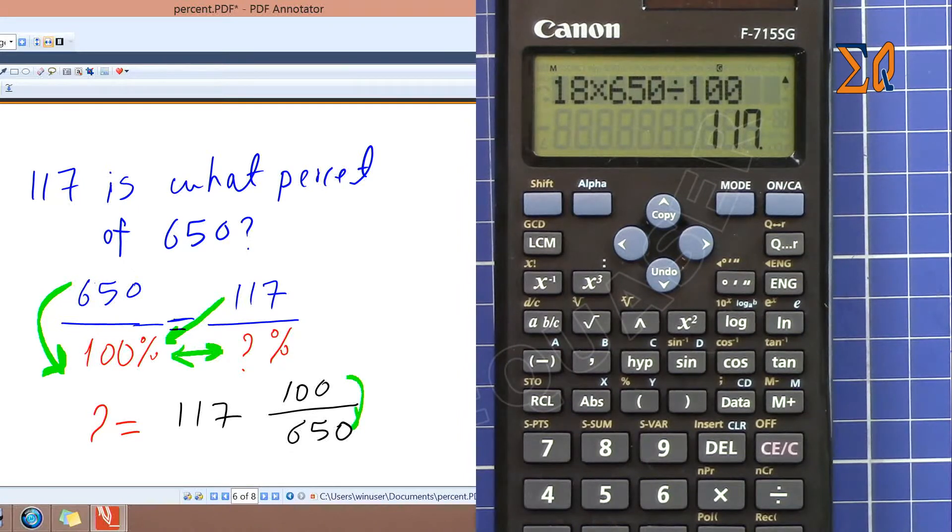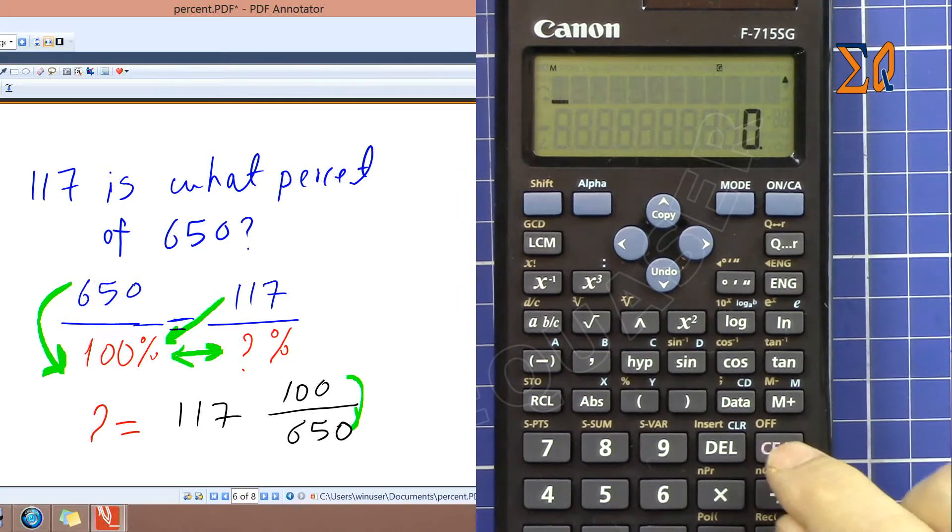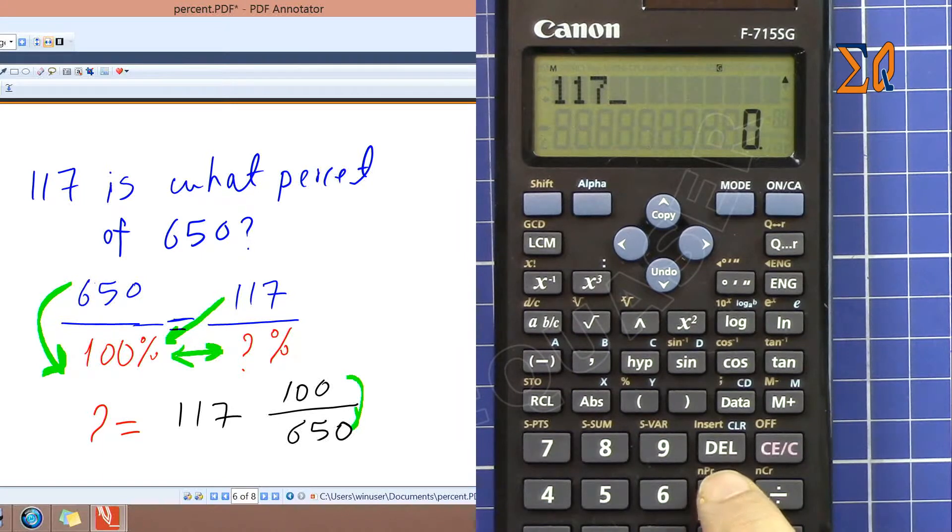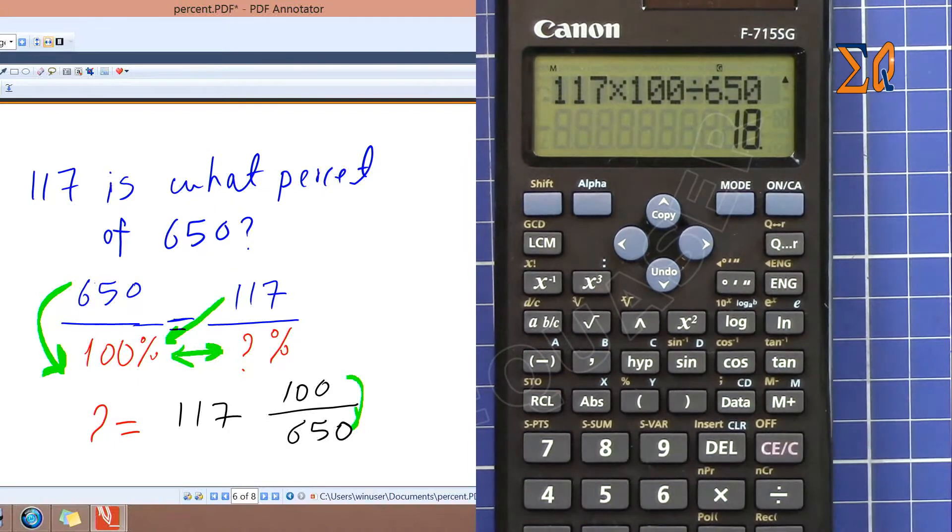So we do 117 times 100 divided by that, or put 117 and then flip this value 100 over 650. So now let's do it: 117 times 100 divided by 650 and you get 18 percent.